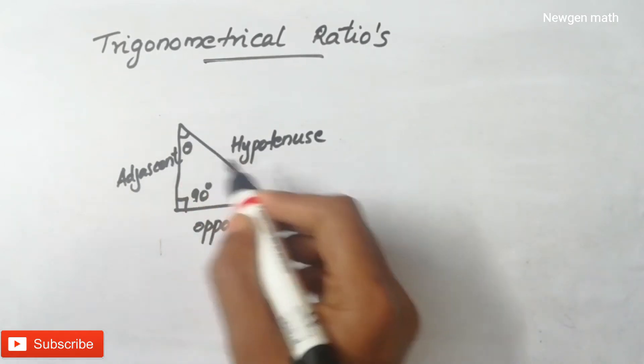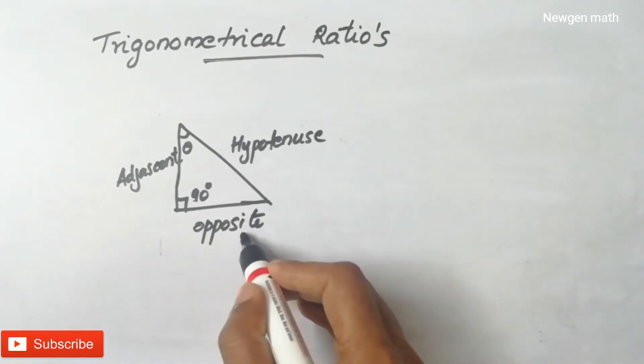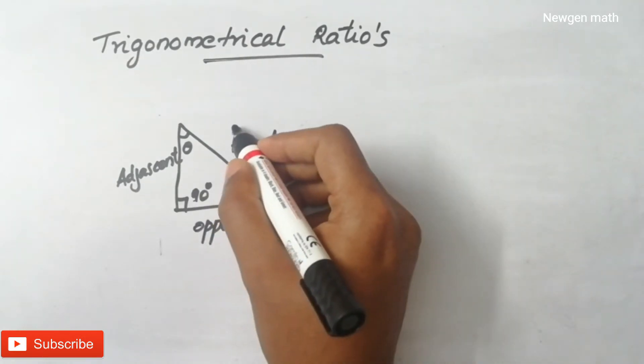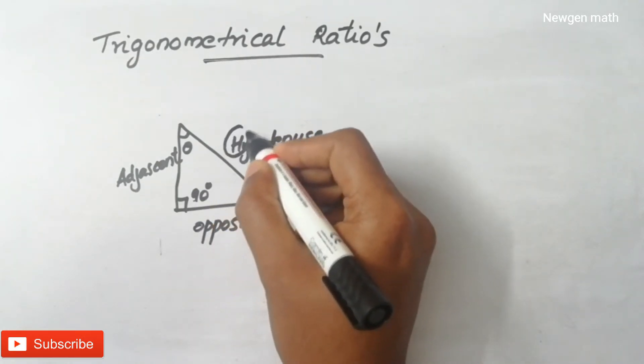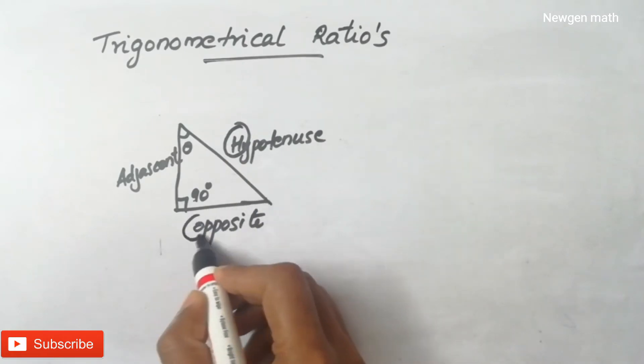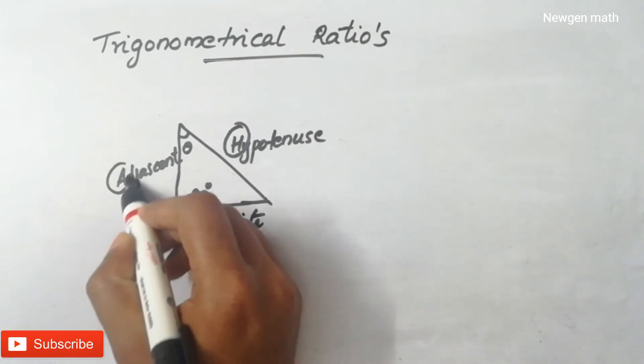There are three sides: hypotenuse, opposite, and adjacent. We will learn how to identify the hypotenuse. Let's look at H. The idea is that the opposite is O and the adjacent is A.